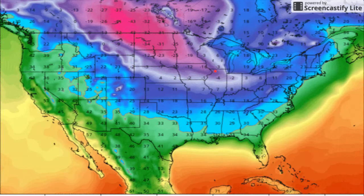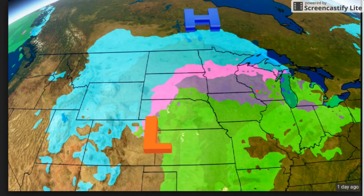Which is why, with this storm system that we have — the Christmas storm, the Christmas blizzard — you can see this huge swath of sleet, this huge swath of freezing rain, because a lot of the cold air was still there.